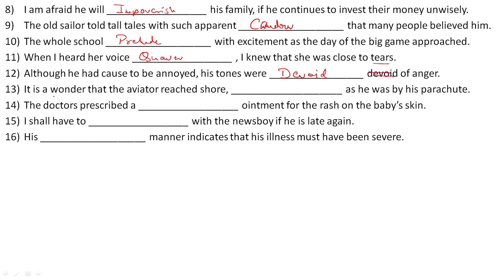It was a wonder that the aviator reached shore, dash as he was by his parachute. He was scattered or tangled, so the word here is 'encumbered.'